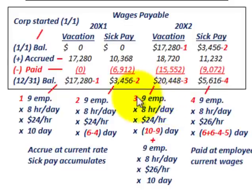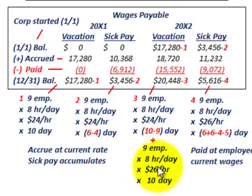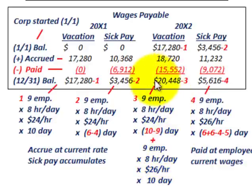As a reasoning cross-check for the 20X2 vacation ending balance: one day was carried over at the old $24 rate (10 days given, 9 used, so 1 remaining), plus the new year's accrual at $26 per hour for 10 days given. Adding these amounts together gives the same figure of $20,448. Understanding this reasoning is important beyond just using the chart.